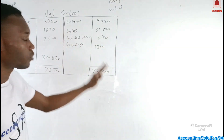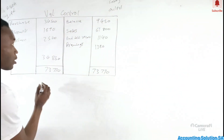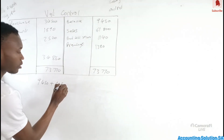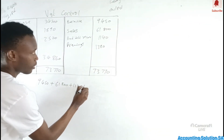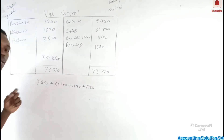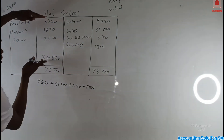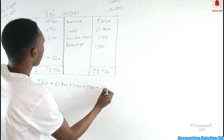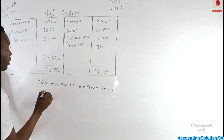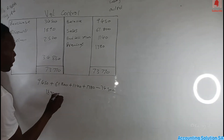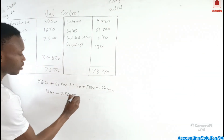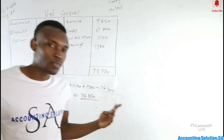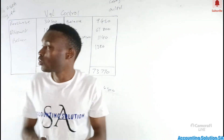Another strategy besides the control account: add all the output (credit) amounts — R9,450 + R61,800 + R1,140 + R1,380 — then subtract all the input (debit) amounts. Subtracting R34,500 and R1,890 and R2,520 gives you the balance of R34,860. Very simple and straightforward — this is what you need to do to prepare your VAT control account.